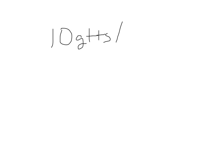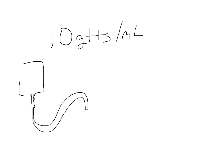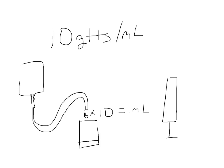Let's talk about these different drip sets. One of them is 10 drops per mL. What that means is if you take that drip set and spike a saline bag with a 10-drop set — 10 drops per mL — and run that tubing, every 10 drops that comes out, you're going to have one milliliter of fluid. So if you had a syringe equal to 1 mL, you would need just 10 drops using that 10-drop set. That's what 10 drops per mL means.